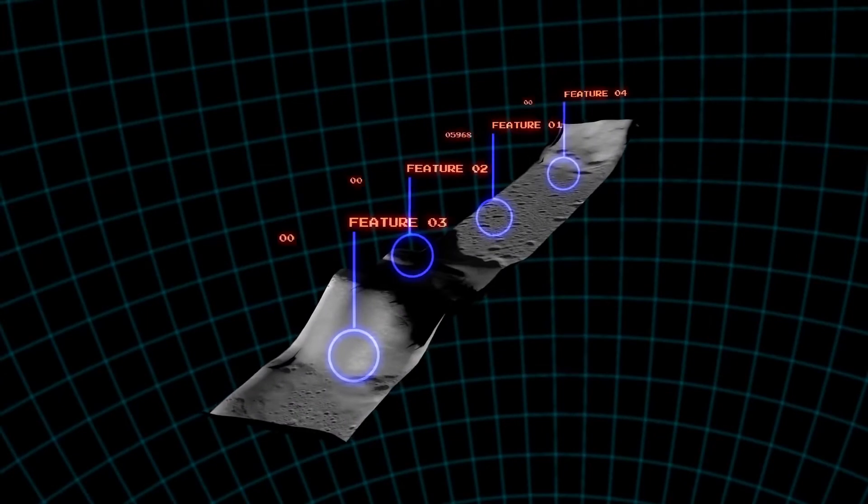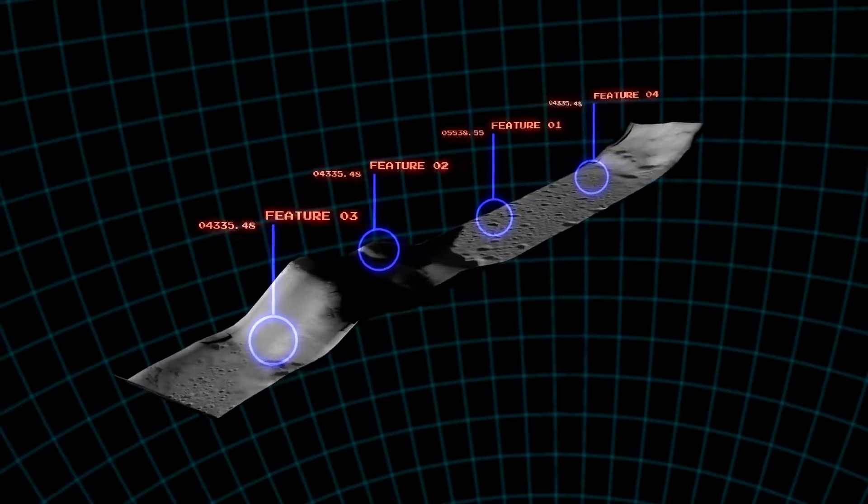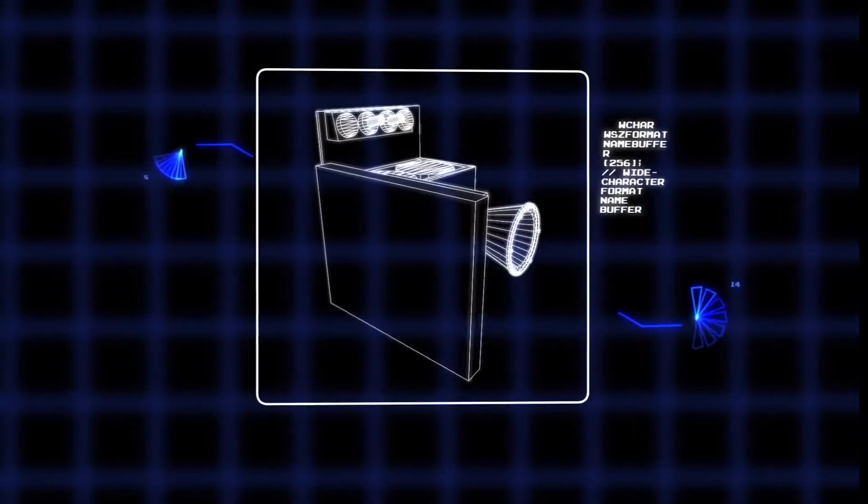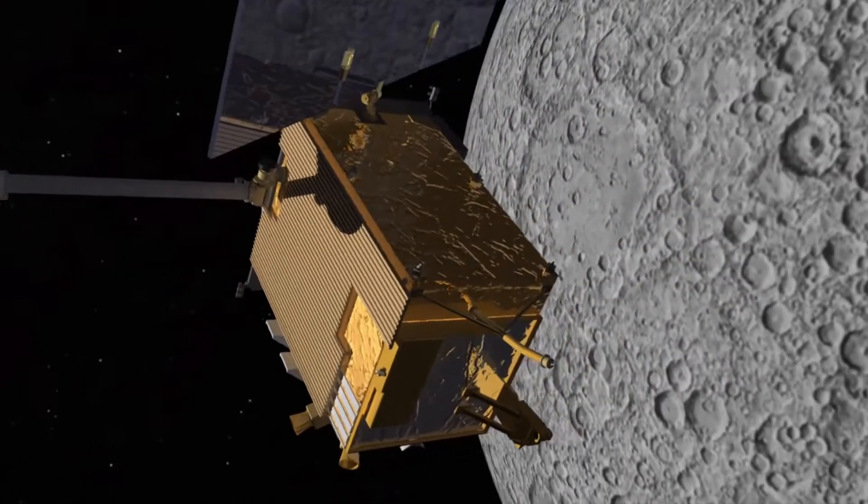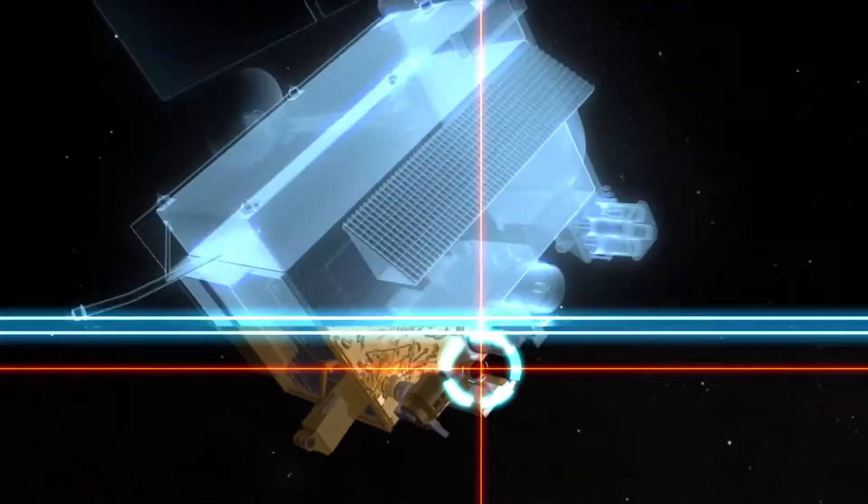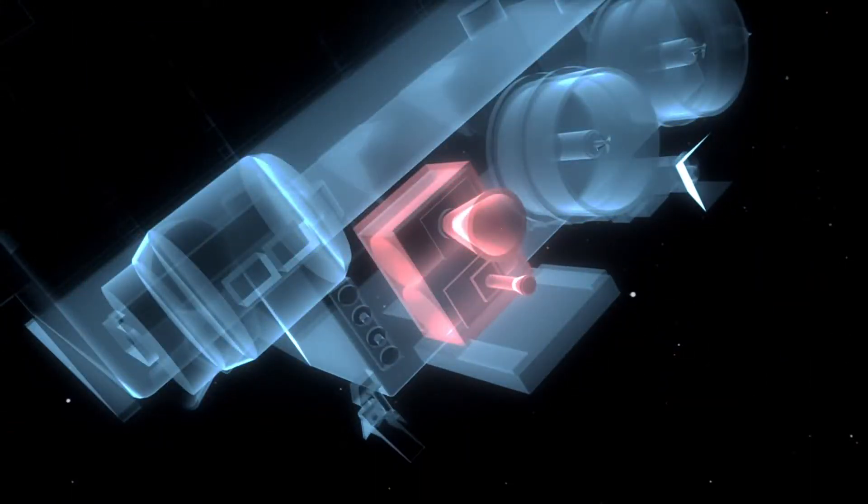But what if you wanted to know what the mountain looked like as a 3D model? To find out, NASA scientists can use a precise measuring tool called LiDAR. Mounted on a satellite orbiting high above a planet, LiDAR instruments are able to accurately measure the distance between the instrument and the landscape below using laser pulses.